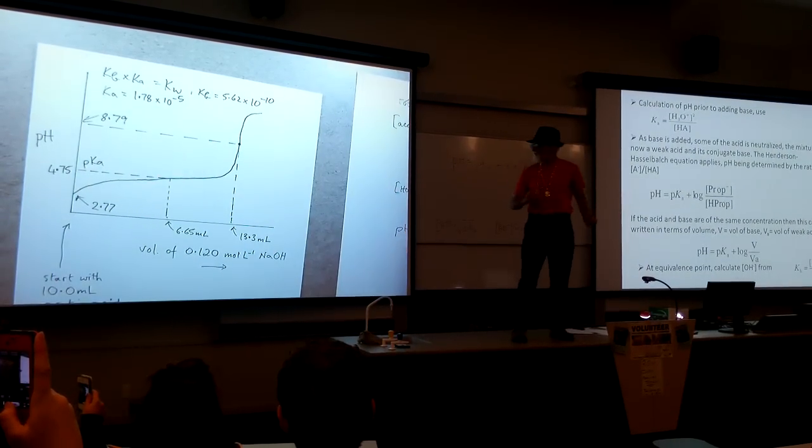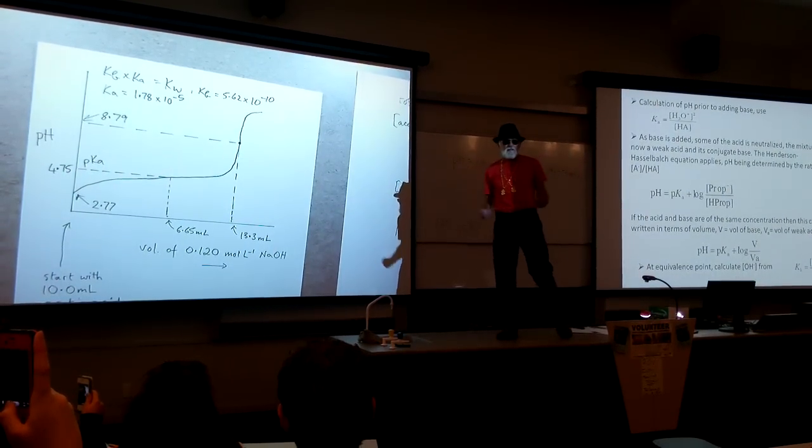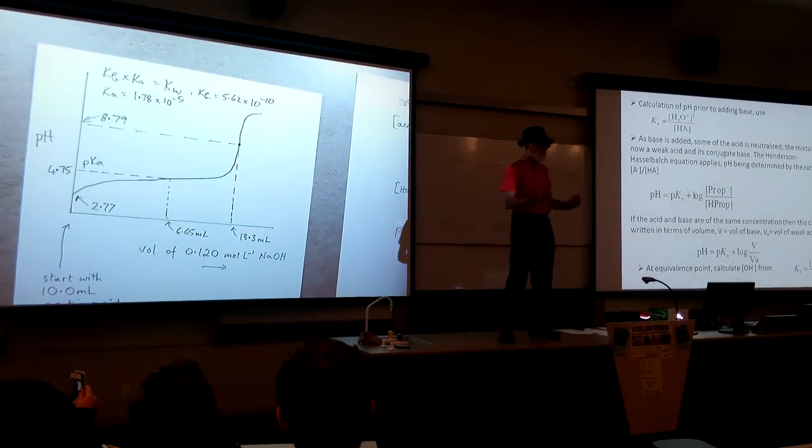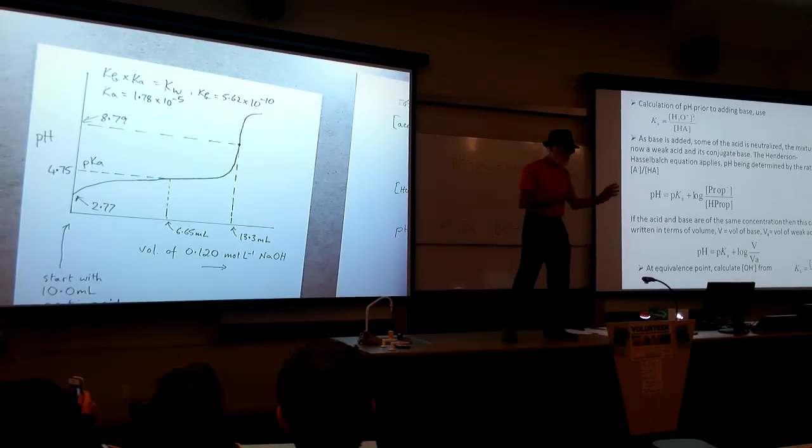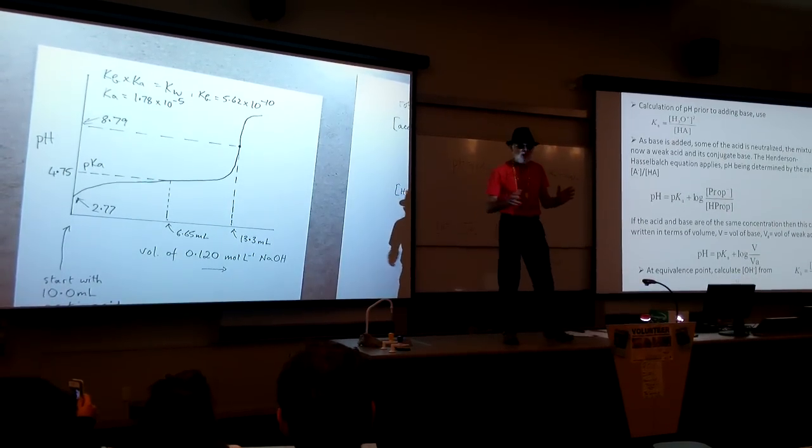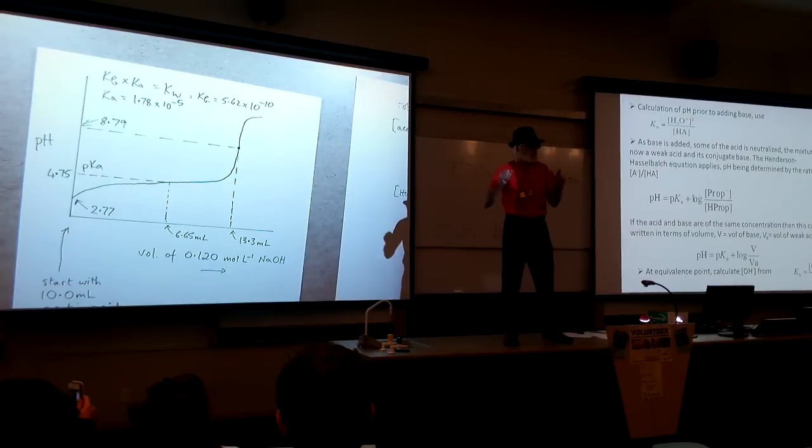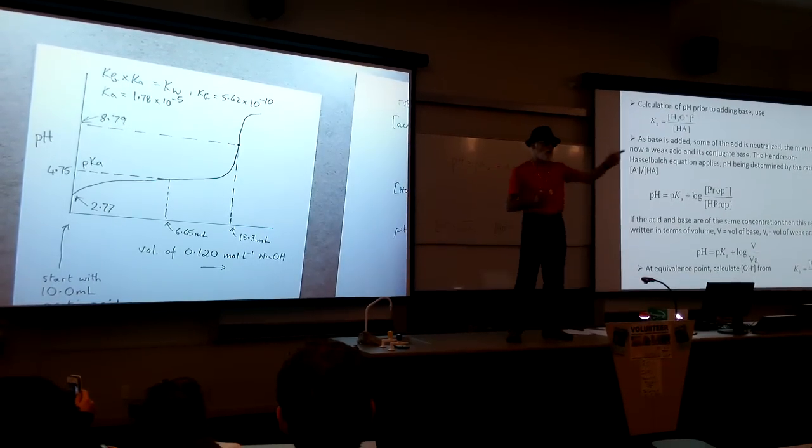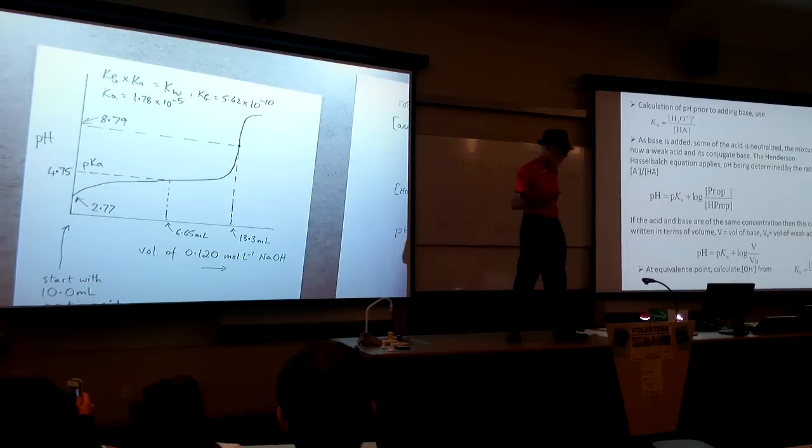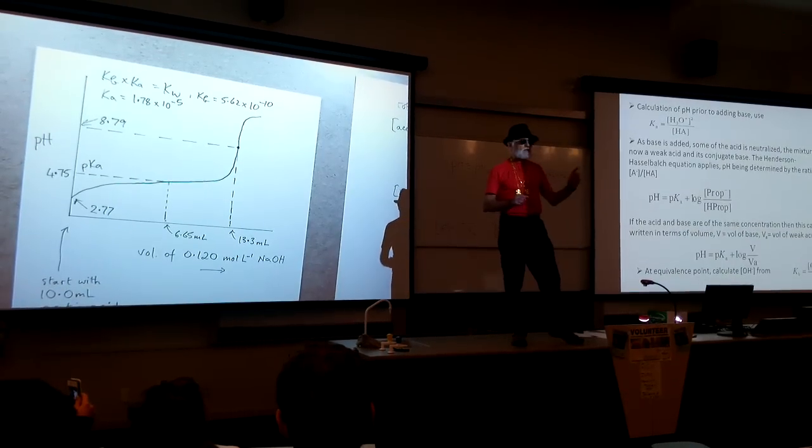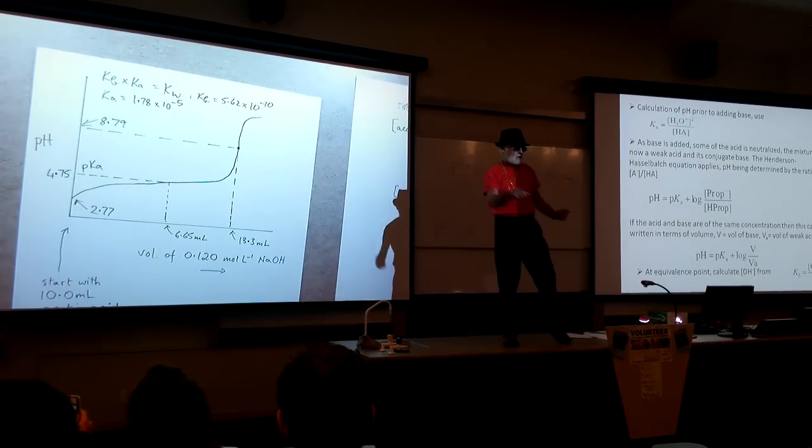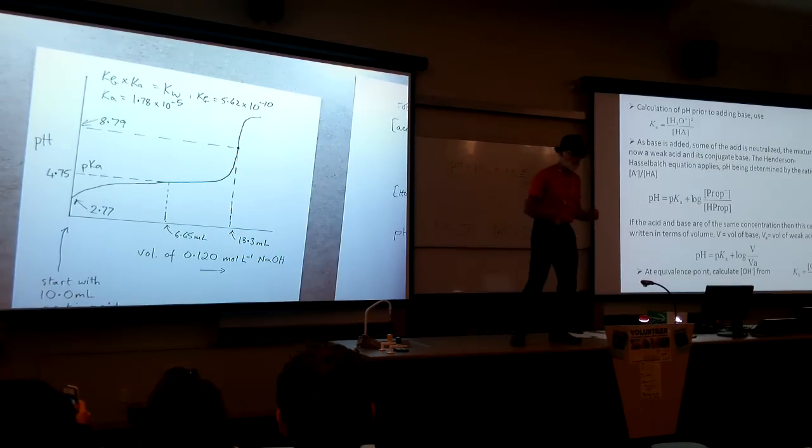The pH at the endpoint is a weak base calculation. You need the Kb of the conjugate times its concentration. Then OH minus is given by that thing when it's been square rooted. Don't forget at that point the mixture's been diluted. You take my word for that. Don't you dispute it. Then pOH from 14 has got to be subtracted. And now you've got the answer. Suppose you've cracked it.